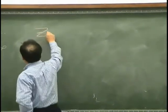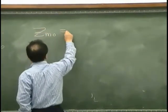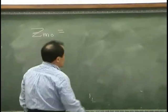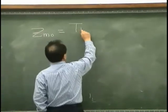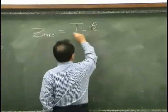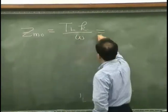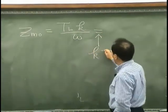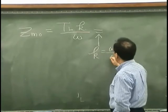Driving point mechanical impedance is TLK over omega, and we know that this wave number is omega over C.